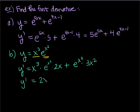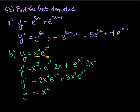So we get y prime equals 2x to the 4th times e to the x squared, plus 3x squared times e to the x squared. I'm going to simplify this by factoring out x squared and e to the x squared. A lot of times we're going to use the derivative for finding maximums or minimums, so I want to factor this in order to set it equal to zero and find critical points.